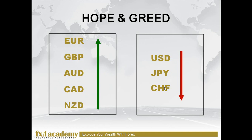Pay attention here. I'm summarizing this in terms of two major boxes. In times of hope and greed, you will see five currencies strengthening and three currencies weakening. The five currencies that strengthen are the euro, the sterling, the Aussie dollar, the Canadian dollar, and the Kiwi dollar. The three currencies that weaken are the US dollar, the Japanese yen, and the Swiss franc. So it's very easy to see that in times of hope and greed, the euro-dollar currency pair will move in an uptrend, the pound-yen will move in an uptrend, the Aussie dollar will also move in an uptrend, and the Kiwi-Swiss will also move in an uptrend.